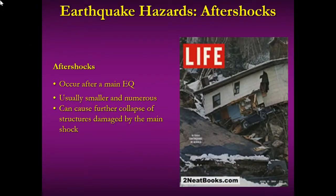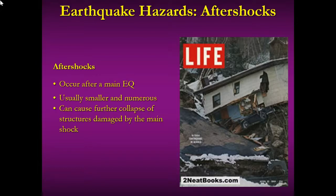Aftershocks are another concern. Earthquakes don't just have one main shock — there are usually foreshocks, which are light shaking as the rock starts to crack along the fault, releasing a little elastic energy. When the rock has a quick slip, that's the main shock, releasing the most elastic energy. Then as the rock locks back into place, those are the aftershocks. They're usually smaller and numerous but can be significant. The 2011 Japan earthquake had a main shock of 9.0, with several aftershocks ranging from magnitude 6 to 7. If a main shock damages an area, aftershocks can finish the job.